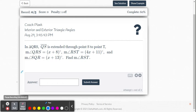Let's look at a few examples for solving interior and exterior triangle angles within the Delta Math online system. So this problem says in triangle QRS, QS is extended through point S to point T.